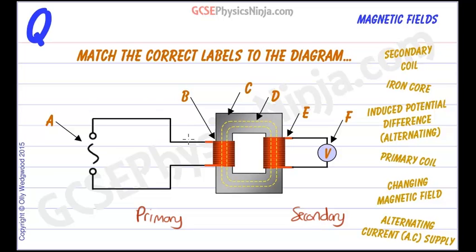Transformers will not work with DC. They won't work with current flowing in just one direction like that from a battery. This is an alternating current supply and we can label that A.